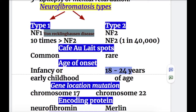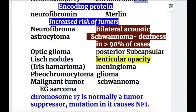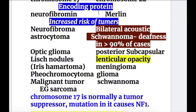Regarding gene location and mutation: NF1 occurs due to a mutation on chromosome 17, which normally acts as a tumor suppressor. NF2 occurs due to a mutation on chromosome 22. In terms of protein encoding, NF1 encodes the neurofibromin protein, whereas NF2 encodes both neurofibromin and merlin protein.